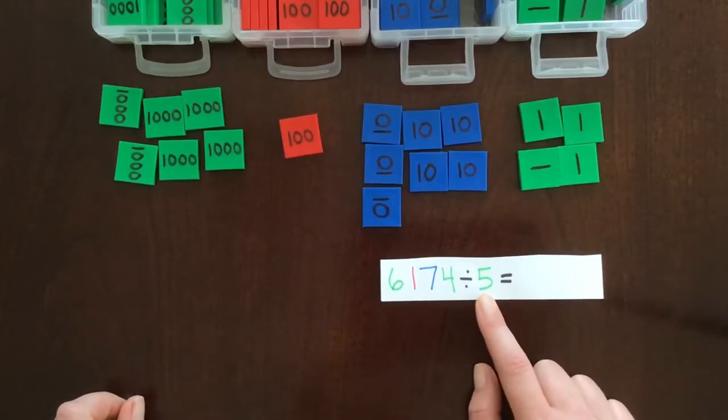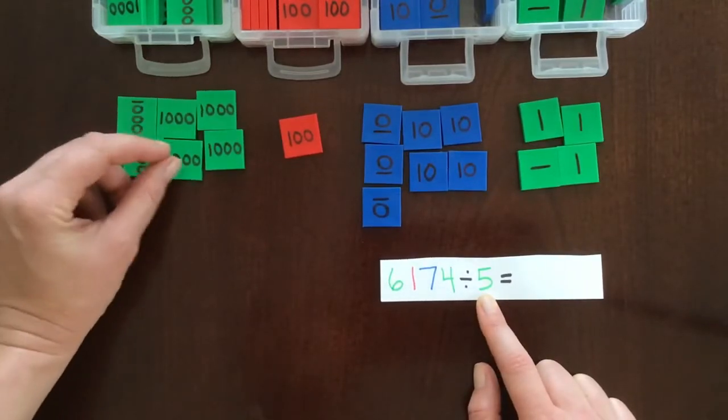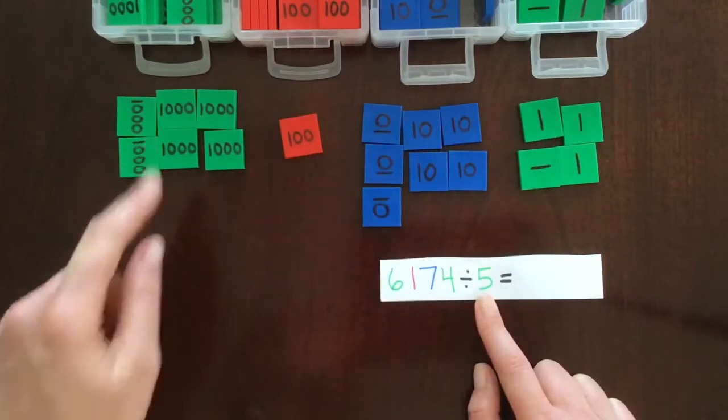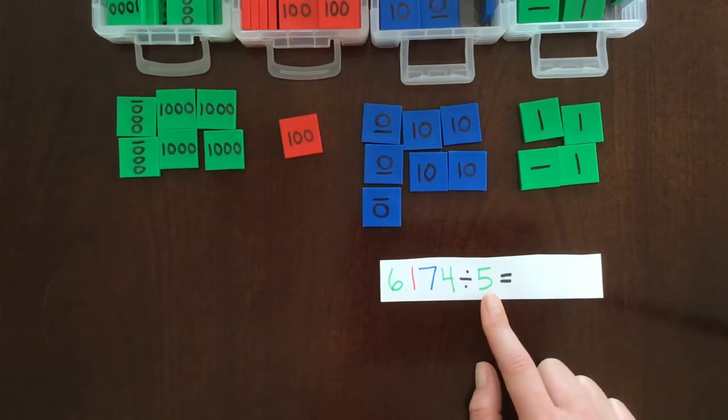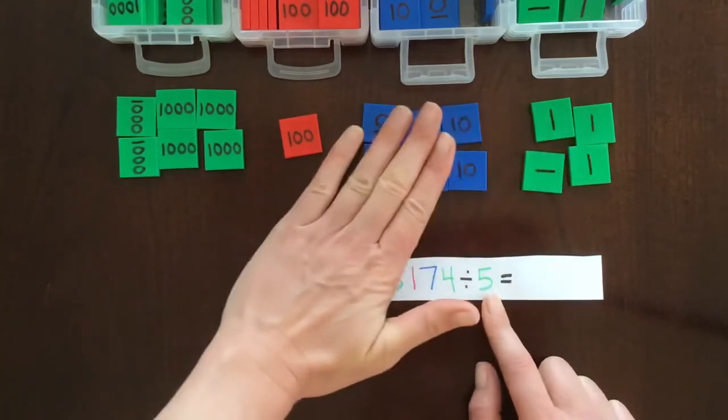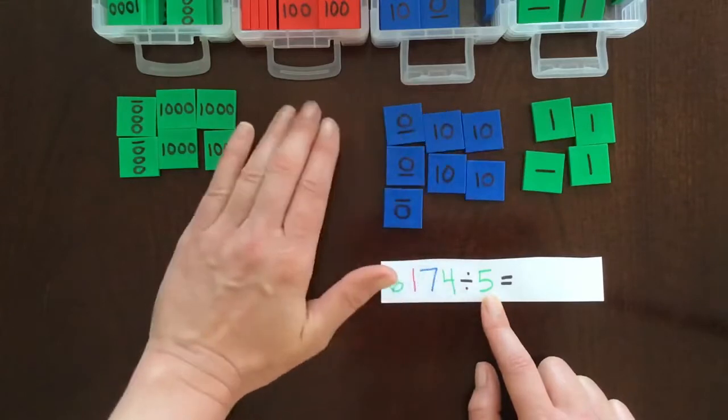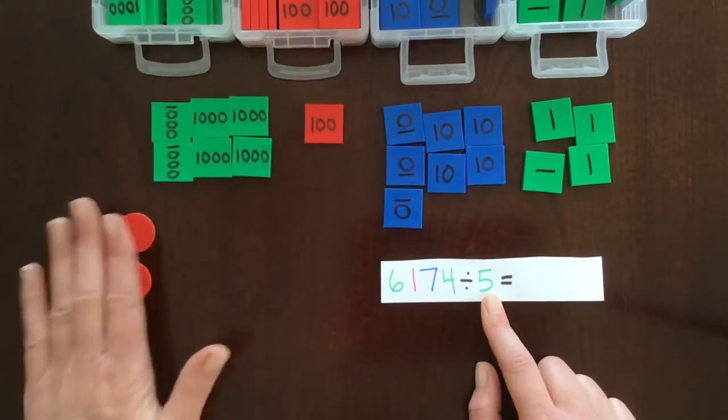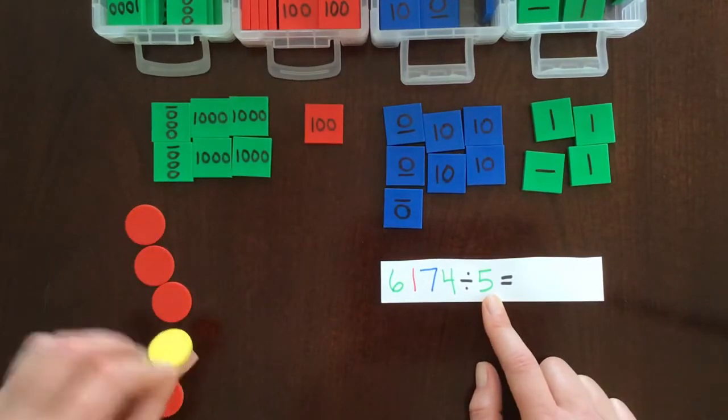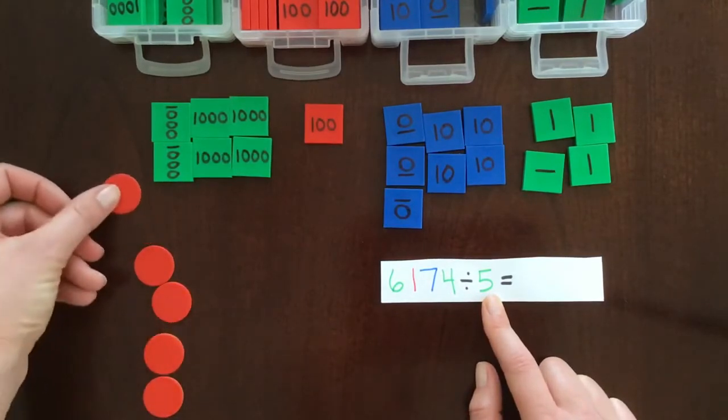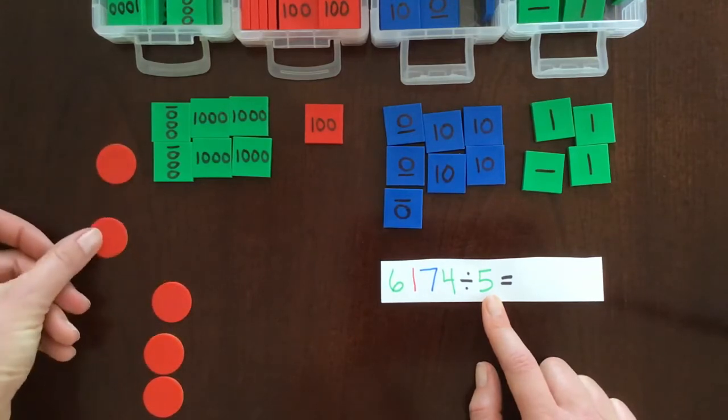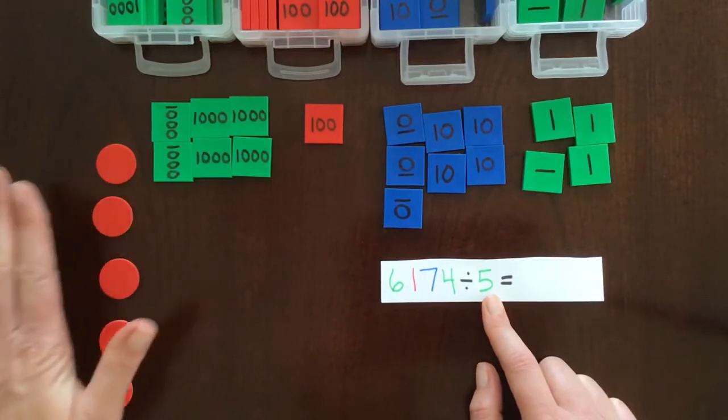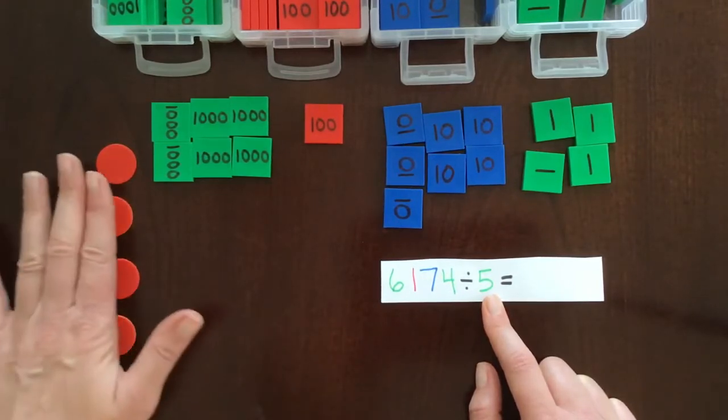Now our divisor tells us how many groups we're going to divide these stamps into. So in this case it's 5. I don't have the little skittles for the Montessori stamp game, I just have these two-sided markers, so I'm going to use those. 1, 2, 3, 4, 5.